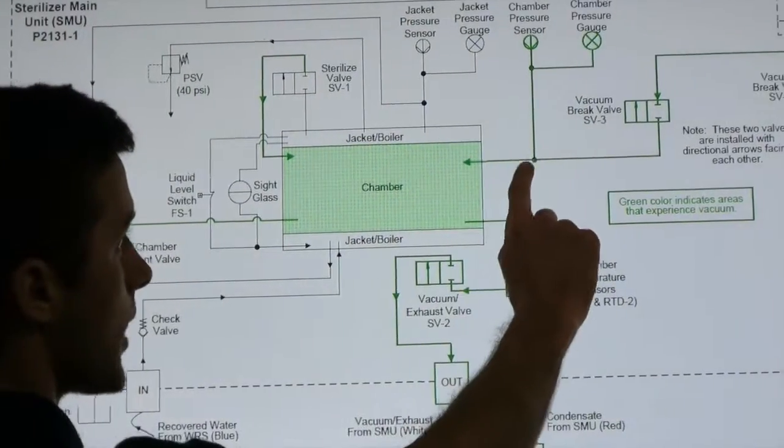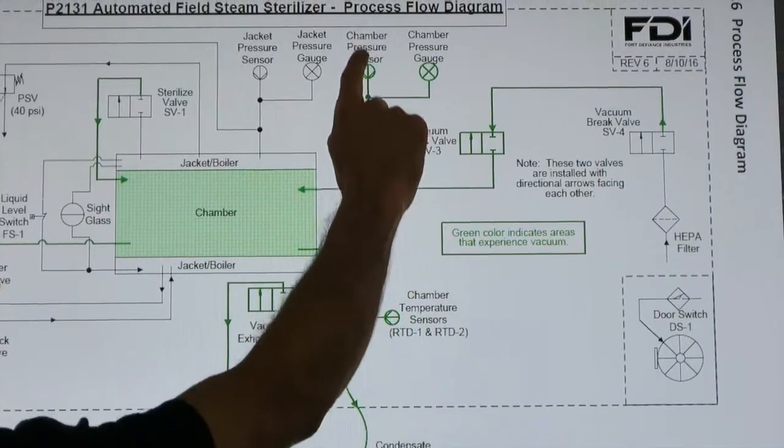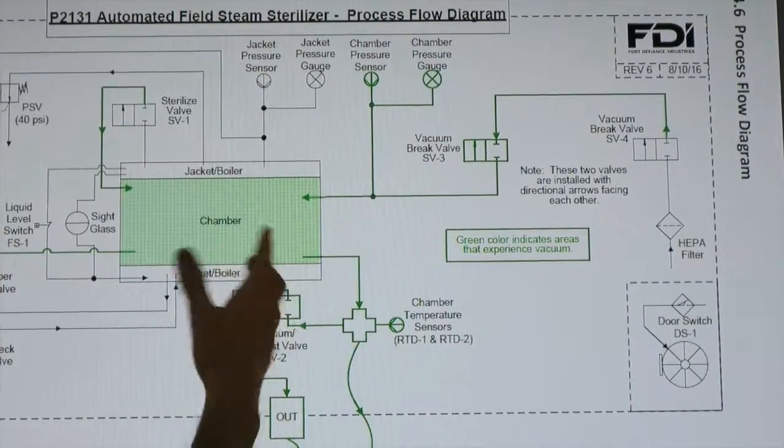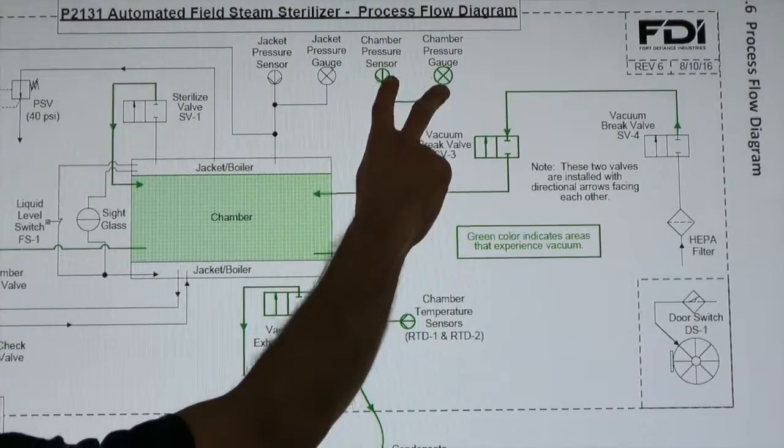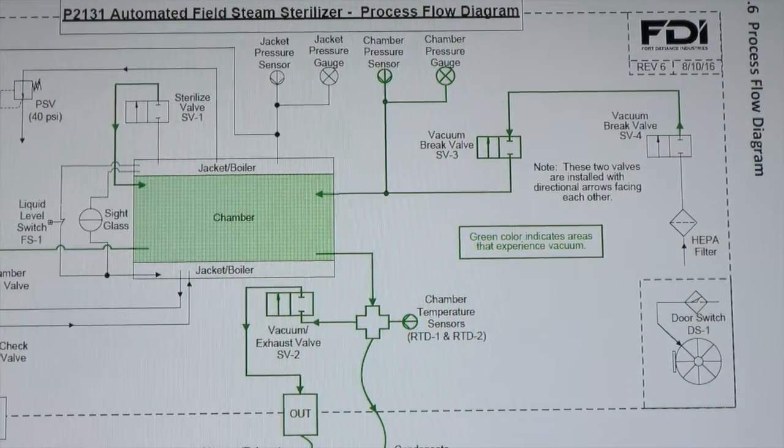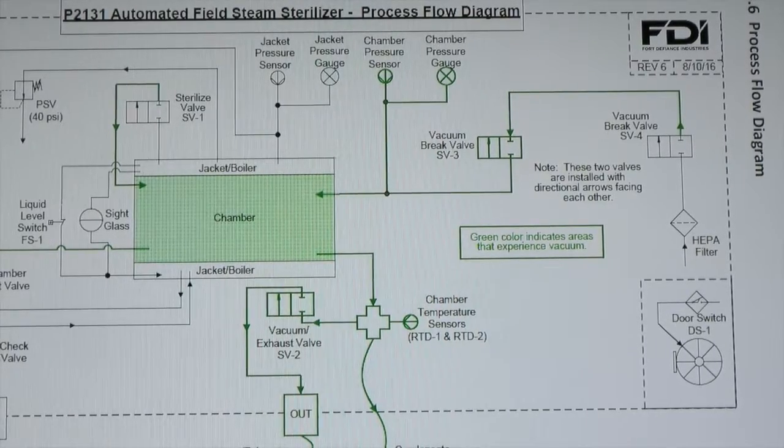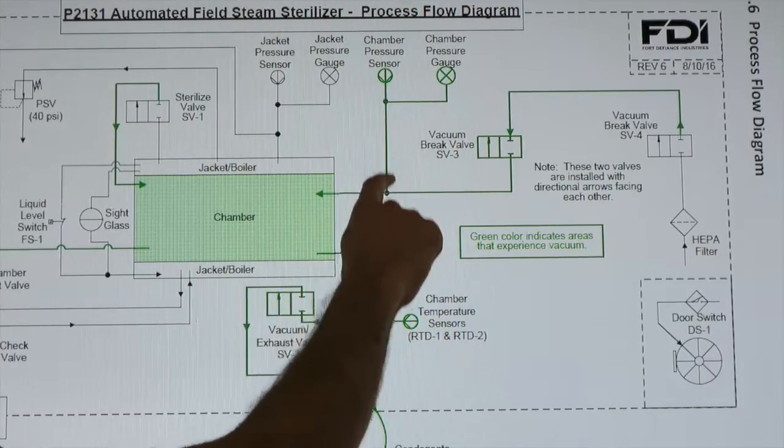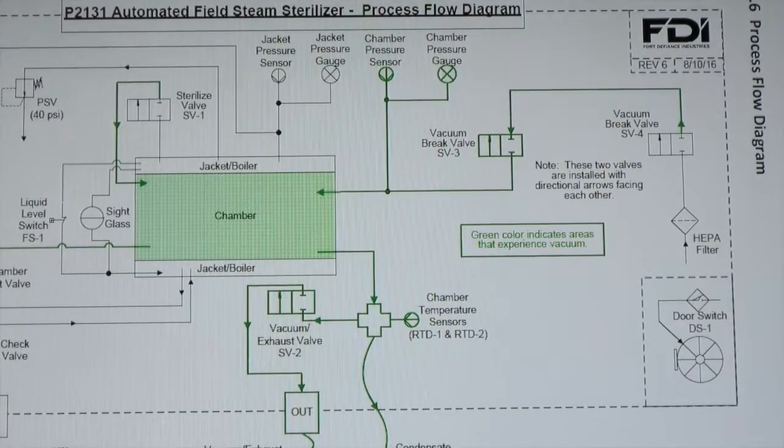Over here on the right, you can see that the chamber pressure sensor and the chamber pressure gauge are connected to the chamber too. So if one of those fittings was leaking, maybe that copper gasket for the chamber pressure sensor was damaged, then you could allow a leak and allow air into the chamber and you would not pass vacuum leak tests.